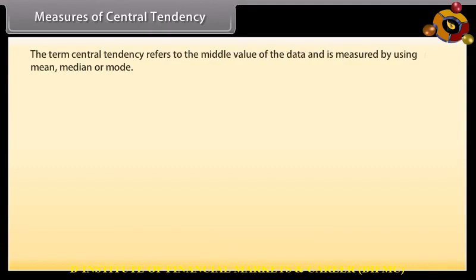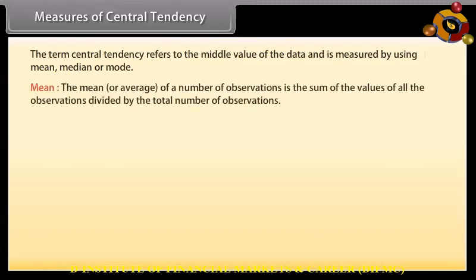Measures of central tendency: The term central tendency refers to the middle value or a typical value of the data, measured using mean, median, or mode. Mean: The mean or average of observations is the sum of the values of all observations divided by the total number of observations. It is denoted by x̄ (x bar).